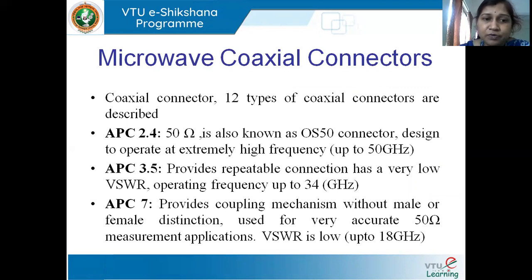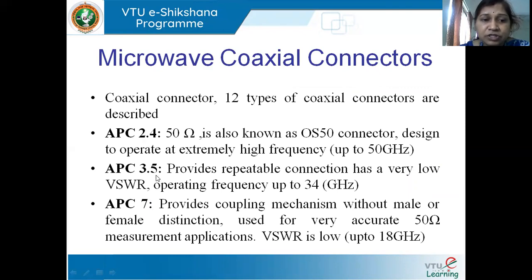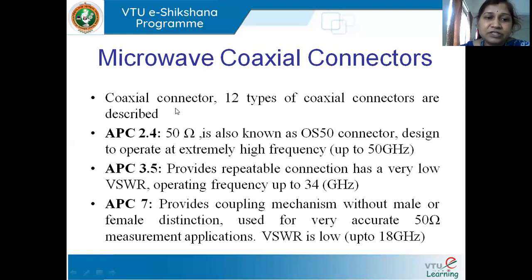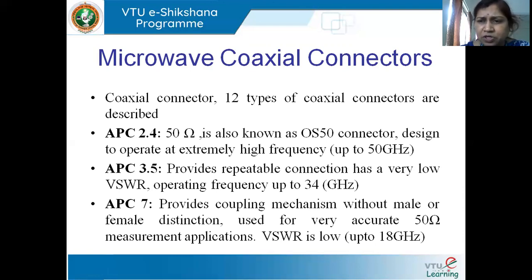Coming forward, the first type of coaxial connector is APC 2.4. I have written APC 2.4, 3.5, 7, and all those things. When I say 2.4, 3.5, 7, these are all related to the physical diameter of the connector. The APC 2.4 is a 50 ohm connector — it has a characteristic impedance of 50 ohms. It is also known as the OS 50 connector, and it is mainly designed to work for extremely high frequencies up to 250 gigahertz.